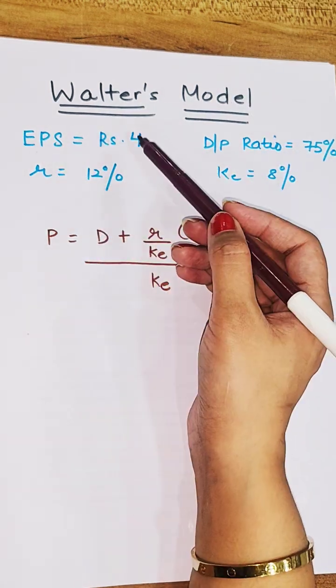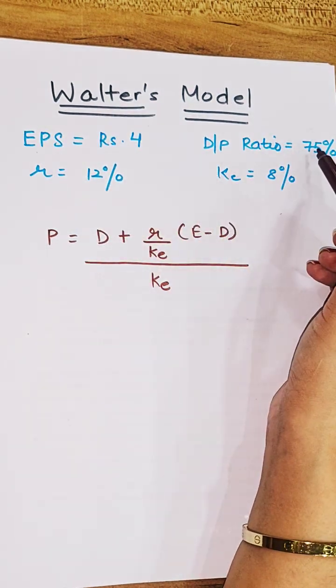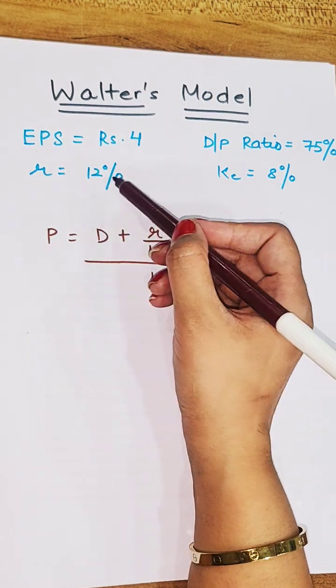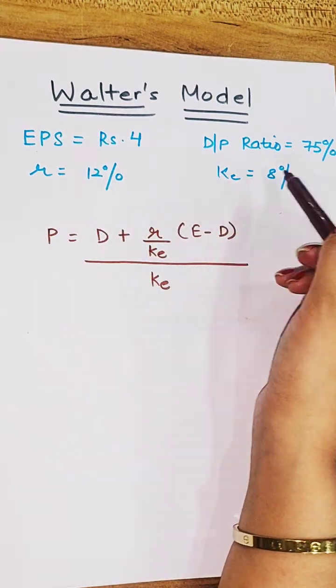Here we are given earning per share rupees 4, DP ratio 75%, R 12%, and KE is given as 8%.